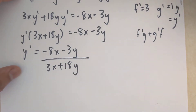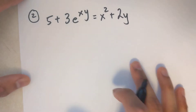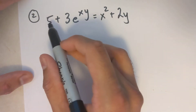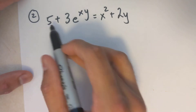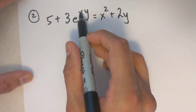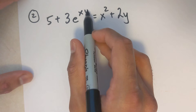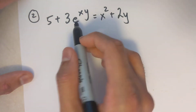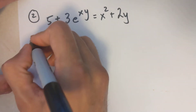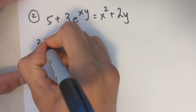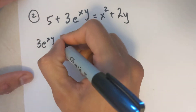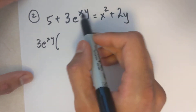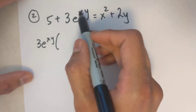Same approach for this question — we differentiate the whole function. The derivative of 5 is 0. For 3e to the power of xy, the derivative of an e function stays the same, so I write 3e^(xy) multiplied by the derivative of the exponent.